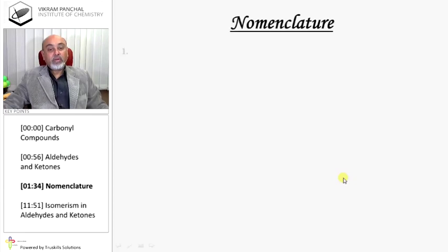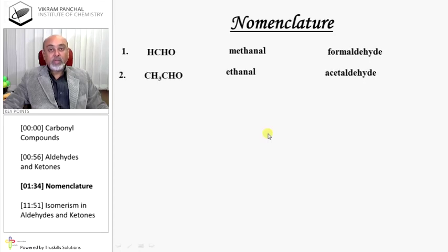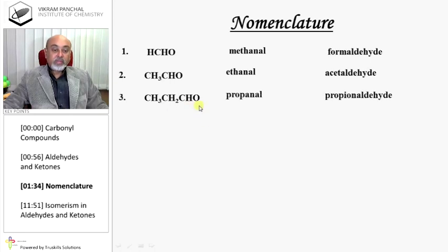Nomenclature of aldehydes and ketones: HCHO is methanal, common name formaldehyde. CH3CHO is ethanal, common name acetaldehyde. CH3CH2CHO is propanal, common name propionaldehyde.